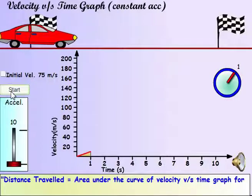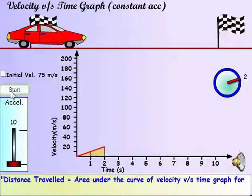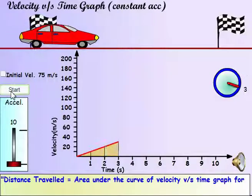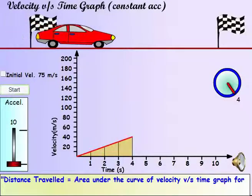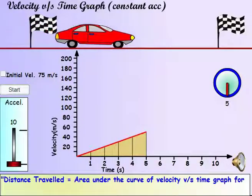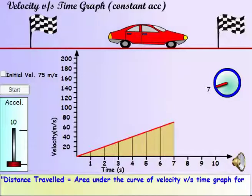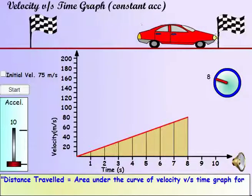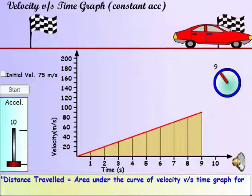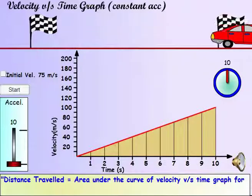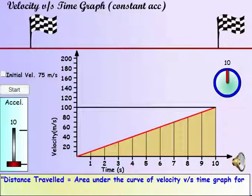When the car is accelerating, the velocity-time graph is a straight line. The area under the graph is the distance traveled by the car. If the car was not accelerating, the graph would have been flat.